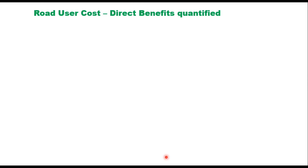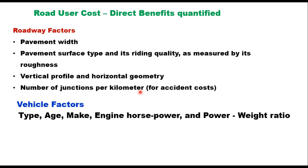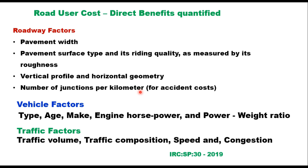IRC SP 30 2019 provides details of road user costs. It considers factors which affect road user cost, and these factors include roadway factors like pavement width, pavement surface type, its riding quality as measured by roughness, vertical profile, horizontal geometry, and number of junctions per kilometer. Vehicle factors like type, age, make, engine, horsepower and power-to-weight ratio, and traffic factors like traffic volume, traffic composition, speed and congestion. Different equations are given in this special publication to estimate road user cost.